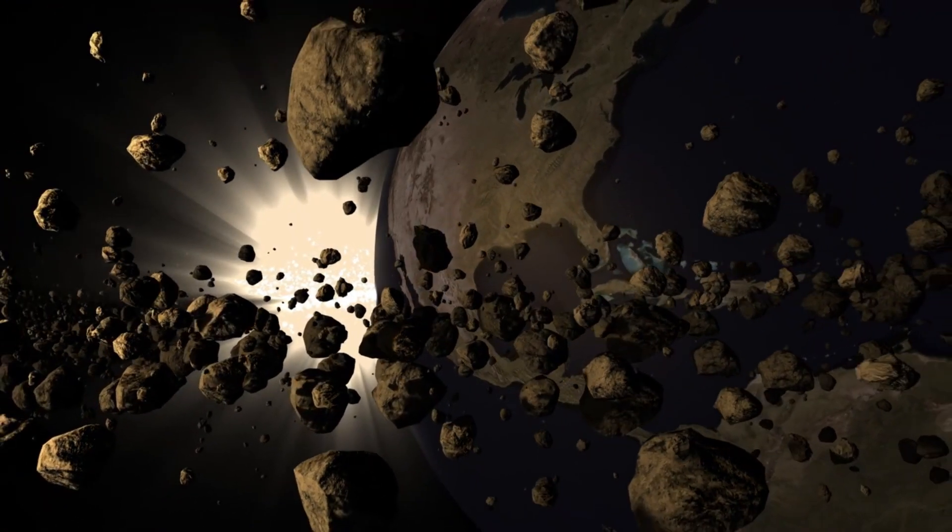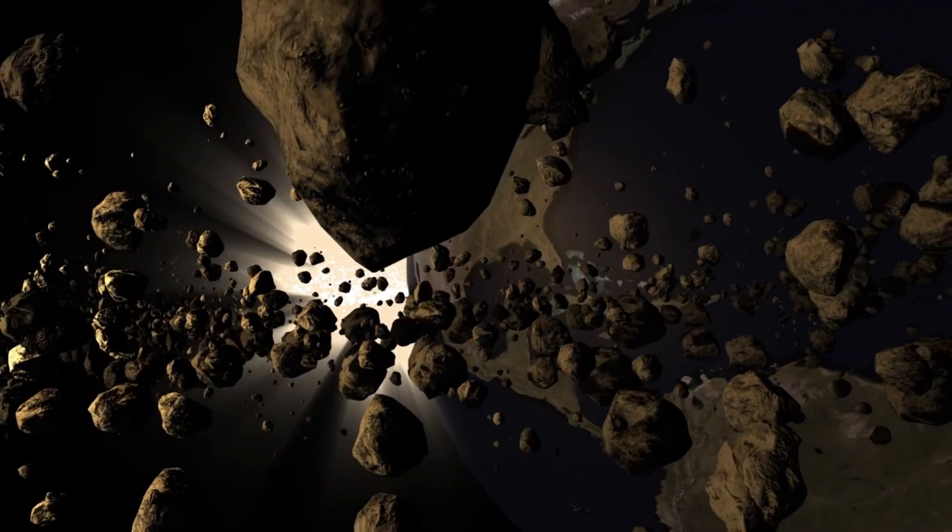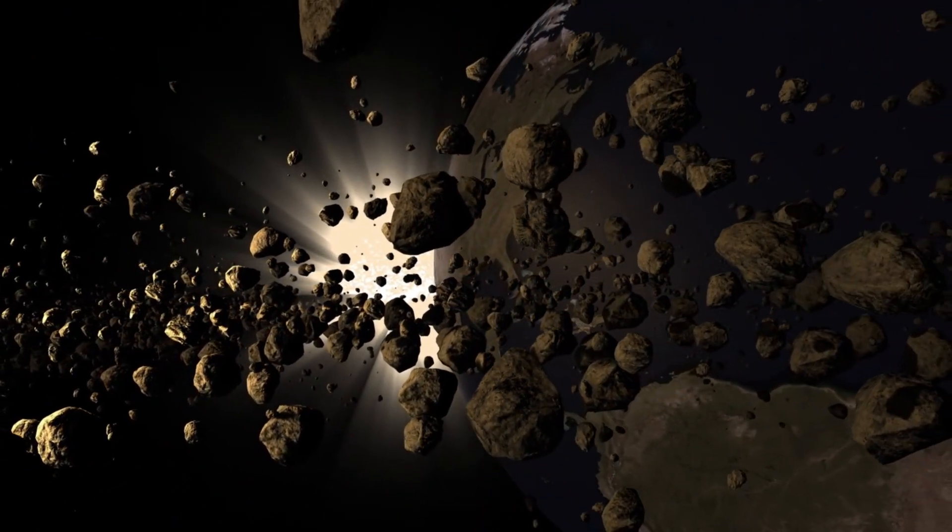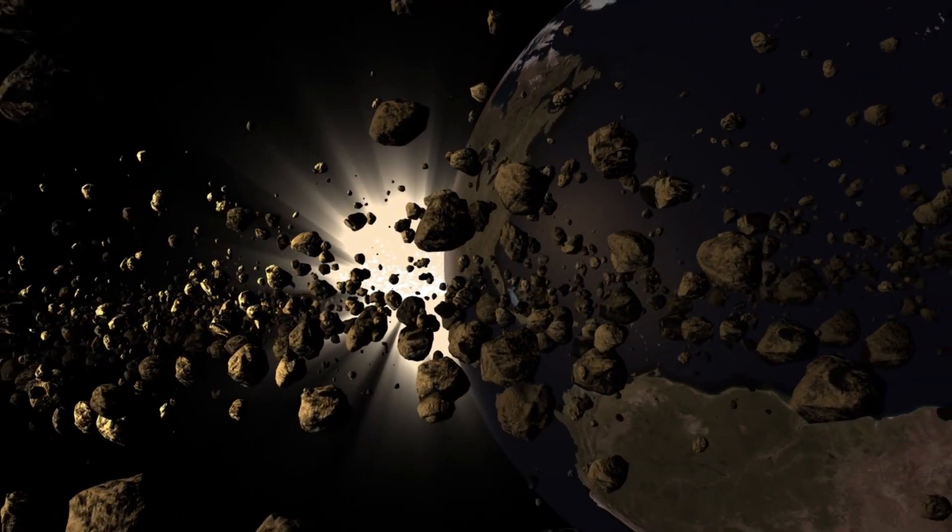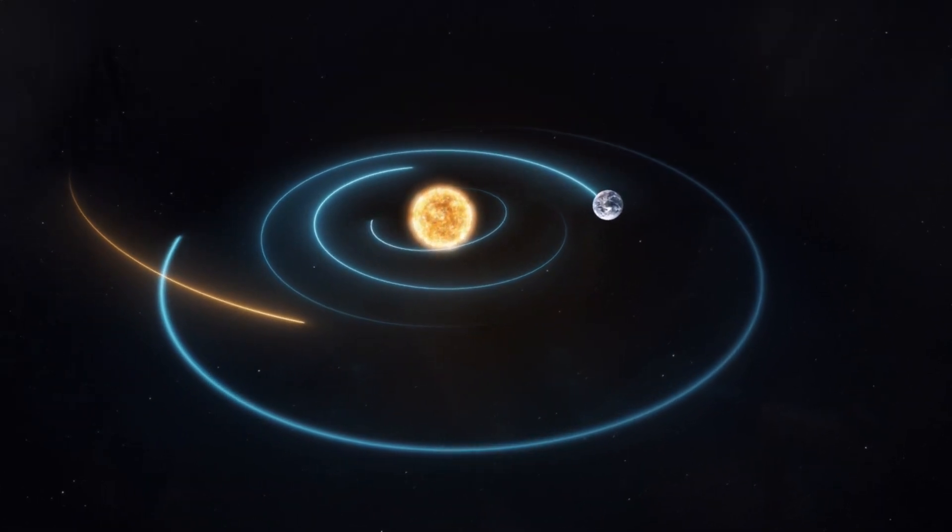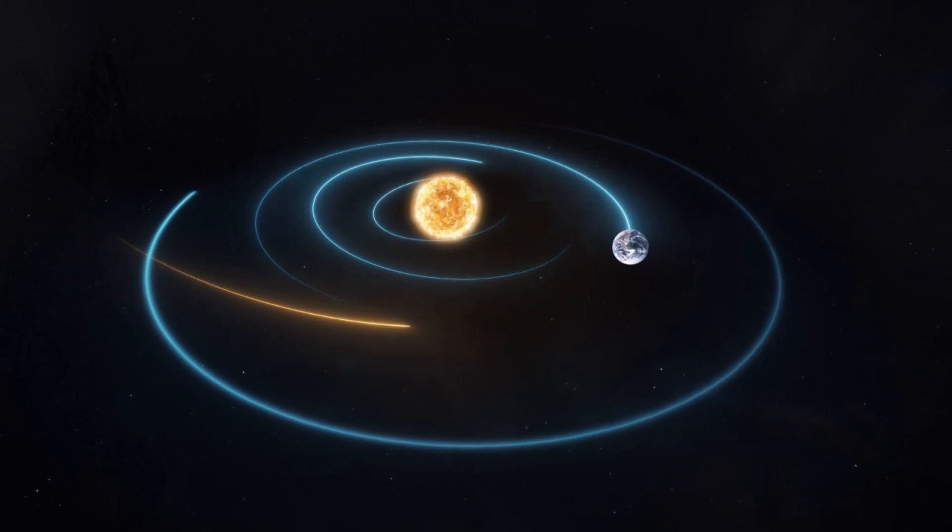Another time lapse focuses on Phobos, the largest and closest of Mars' moons, showing its movement over just 22 minutes. Phobos completes an orbit around Mars in only 7.5 hours, making it the only moon in the solar system to orbit faster than its planet's day.